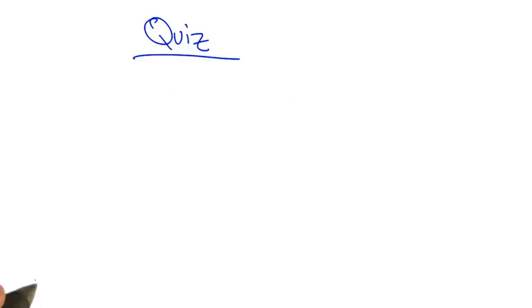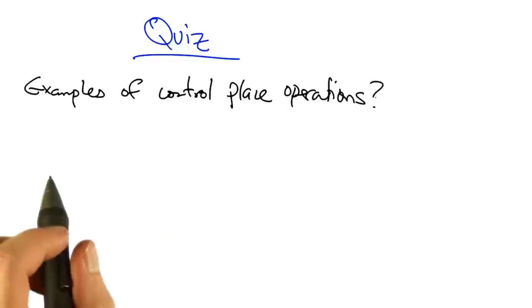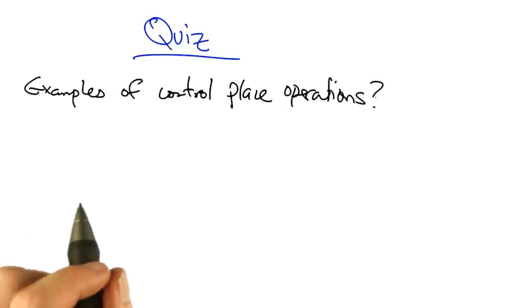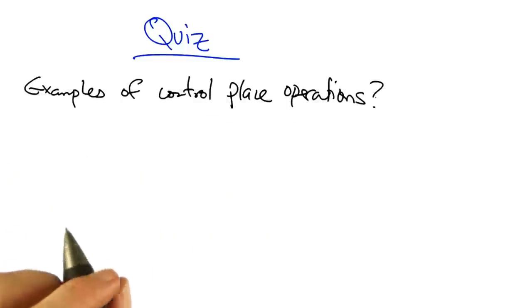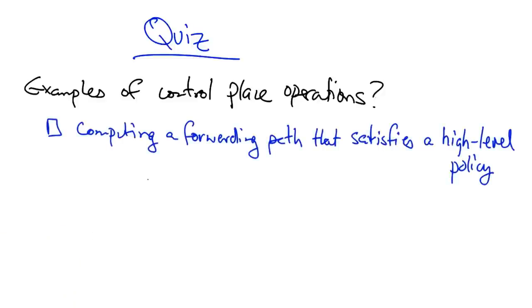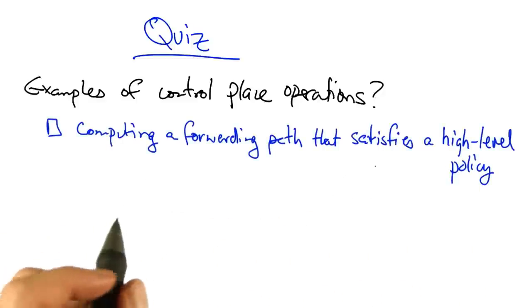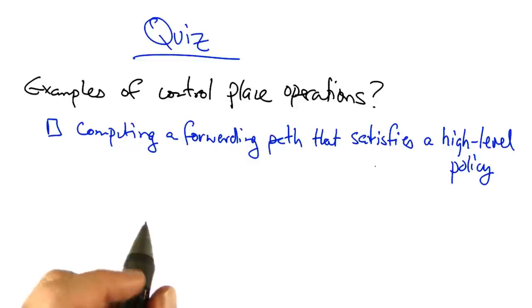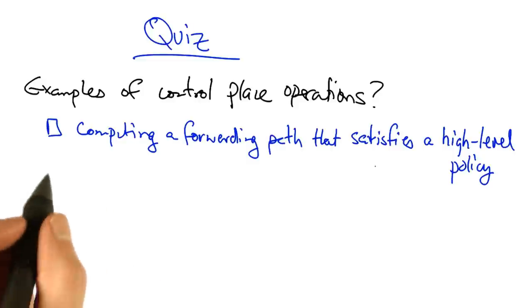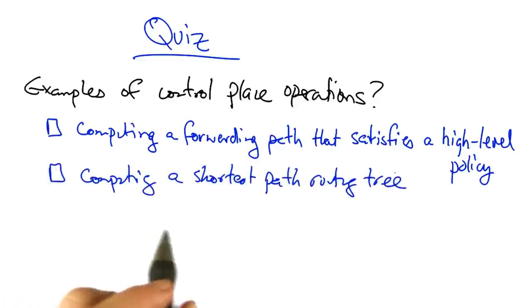As a quick quiz, which of the following are examples of control plane operations? Computing a forwarding path that satisfies some high-level policy, such as an access control policy. Computing a shortest path routing tree.